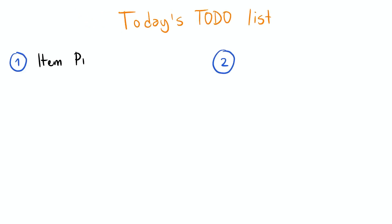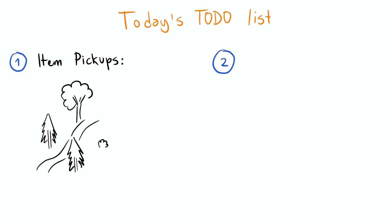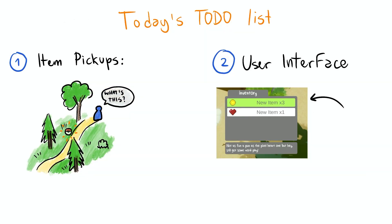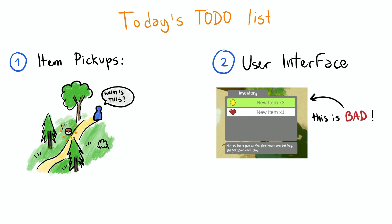Firstly, item pickups. If the game is gonna be based on the exploration of the valley, the player should be able to pick up stuff along the way. And secondly, I need to do something about how the UI looks. If your eye is particularly well trained you might have noticed that it looks like shit, so I've got no time to lose.